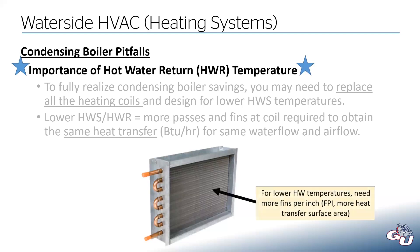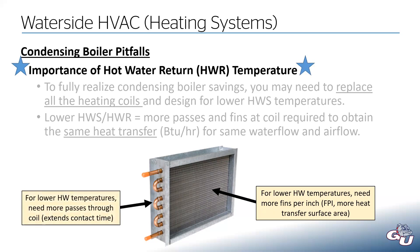If you have a lower hot water temperature, you might need more fins per inch — also called FPI — which gives more heat transfer surface area to get more heat out of lower-temperature water. Alternatively, you may need more passes through the coil or multi-row coils. A two-row coil would serpentine in a zigzag pattern, giving two or even three rows of additional heat transfer surface area and extending how long the water stays in the coil.